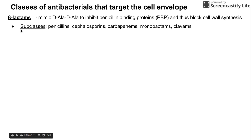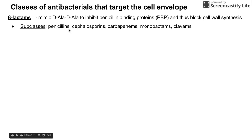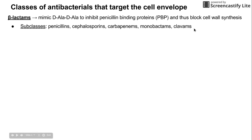Let's get some subclasses of beta-lactams down. Penicillins is the most common one — the first antibiotic to be discovered. Another big one is cephalosporins. We've also got carbapenems, monobactams, and clavams. These are all the subclasses of beta-lactams.